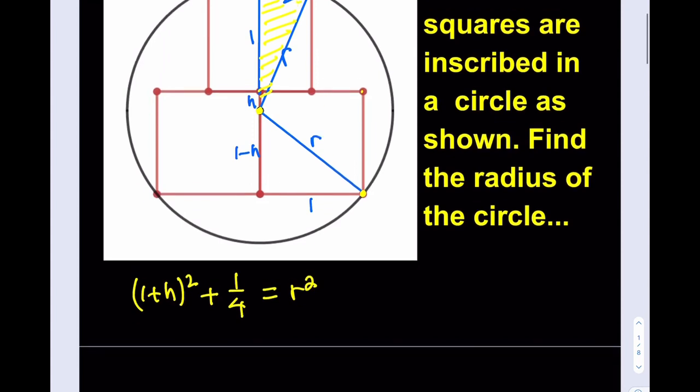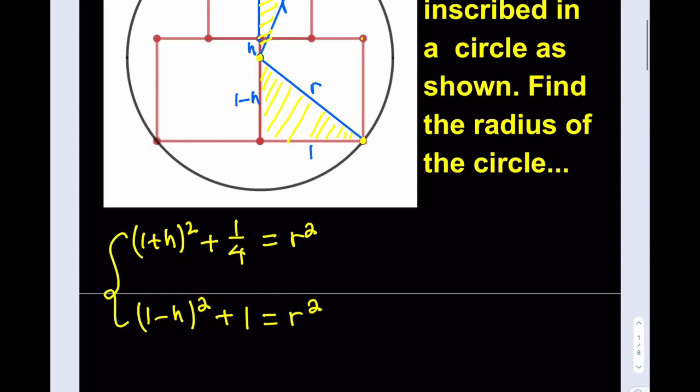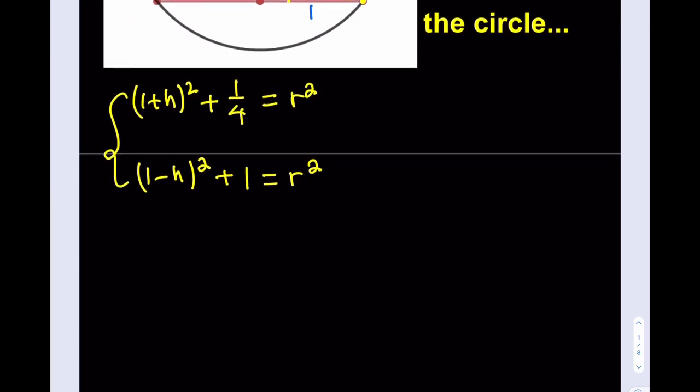That's my first relationship, and let's go ahead and write the second one. And the second one is going to be coming from here. And that's going to look like one minus h squared plus one, which we know the side length of one of the squares, is equal to r squared. Awesome. Now, I got two relationships, and they both give me r squared, which means that if two things are equal to the same thing, then they're equal. Let's say that one more time. If two things are equal to the same thing, then they're equal. So I can safely say that one plus h squared plus one fourth is the same as one minus h quantity squared plus one.